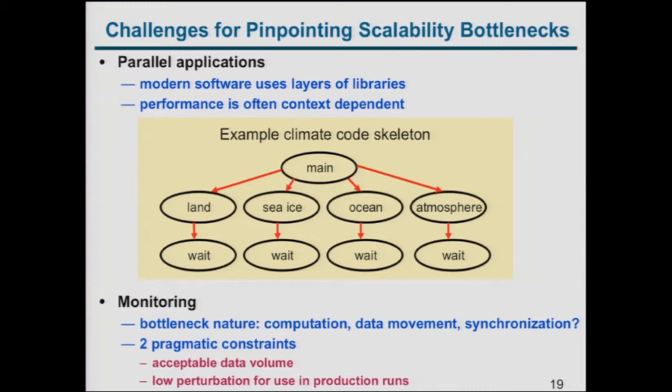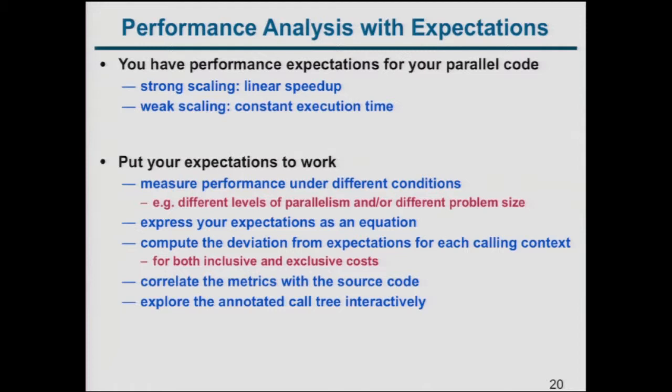The challenge for pinpointing scalability bottlenecks is the many layers of software. In a climate code, the main program calls land, sea-ice, ocean, and atmosphere simulations, each with calls to MPI wait. You need to know which MPI wait is a problem — you need the context. When monitoring, you want to identify bottlenecks whether they're due to computation, data movement, synchronization, or replicated computation, without collecting a huge amount of data or perturbing the execution.